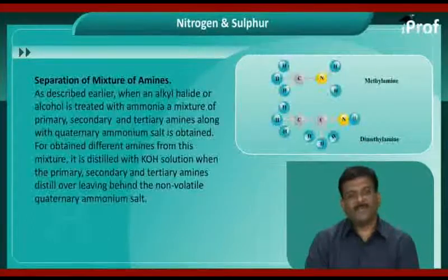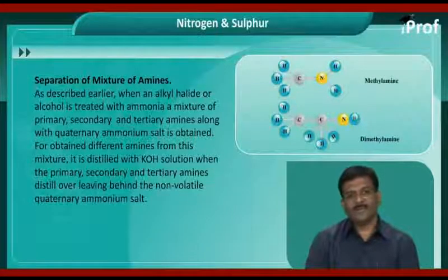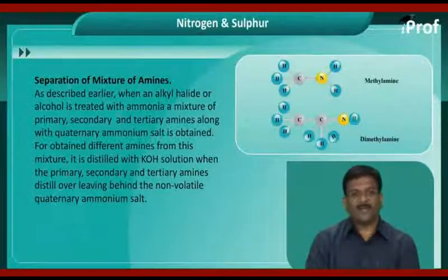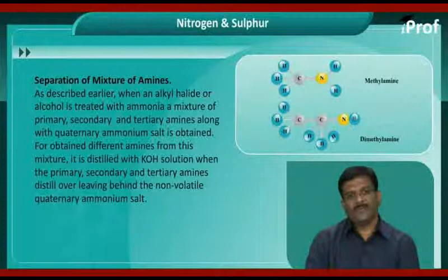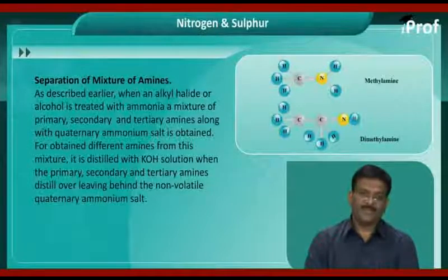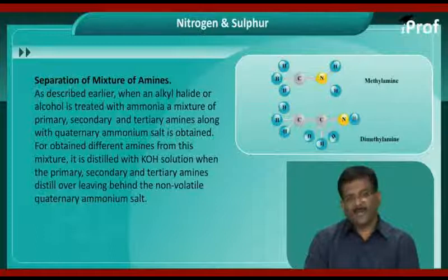Separation of mixtures of amines. When an alkyl halide or alcohol is treated with ammonia, a mixture of primary, secondary, and tertiary amines along with quaternary ammonium salts is obtained. For separating these, the mixture is distilled with potassium hydroxide solution, when the primary, secondary, and tertiary amines distill over, leaving behind the non-volatile quaternary ammonium salt.